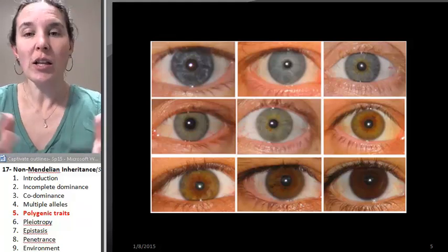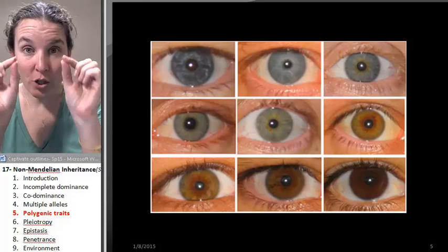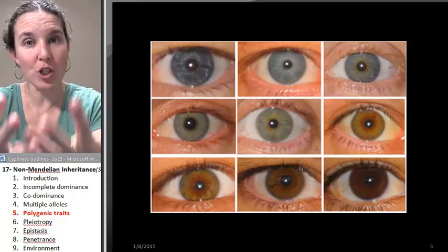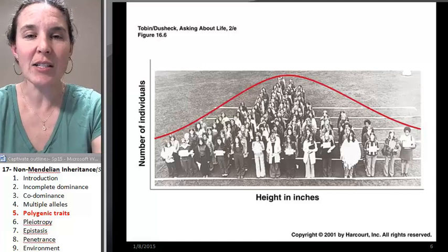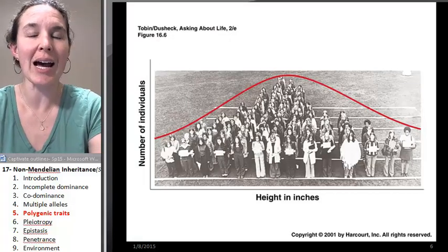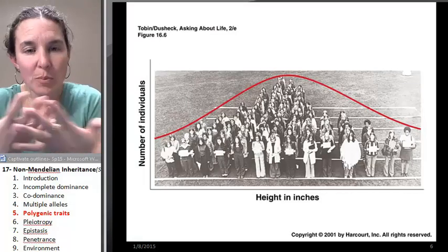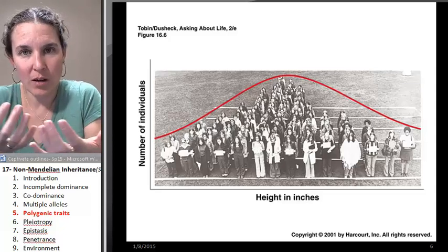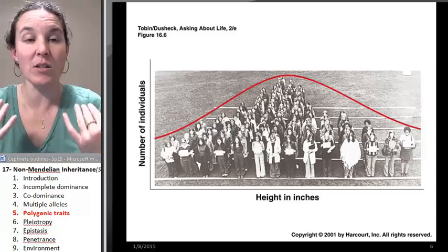All right, so polygenic traits: one trait, multiple genes contributing to that. Another example of a polygenic trait is height. There are multiple genes that are contributing to this phenotype.